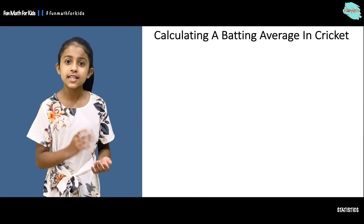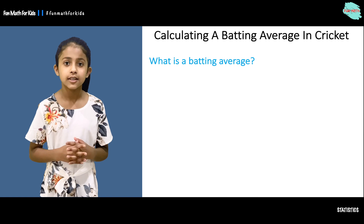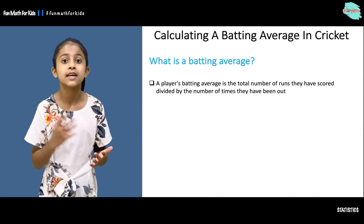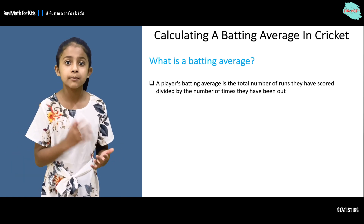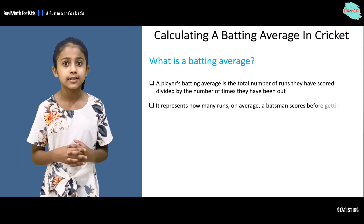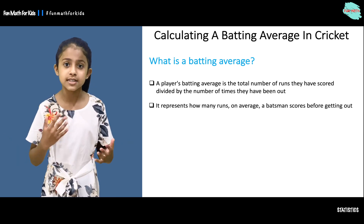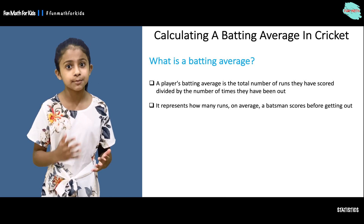Let's understand what is a batting average in cricket. It is the total number of runs they have scored divided by how many number of times they have been out. It tells us how many runs on average a batsman scores.